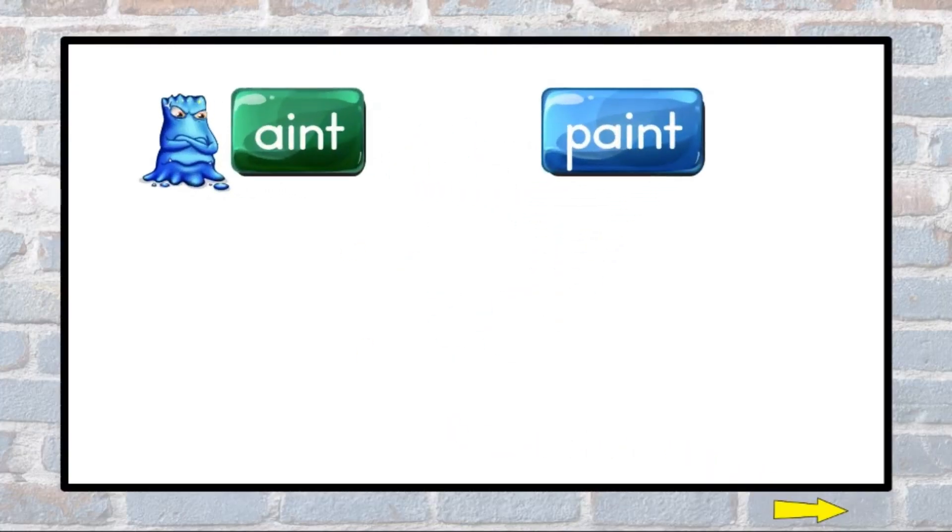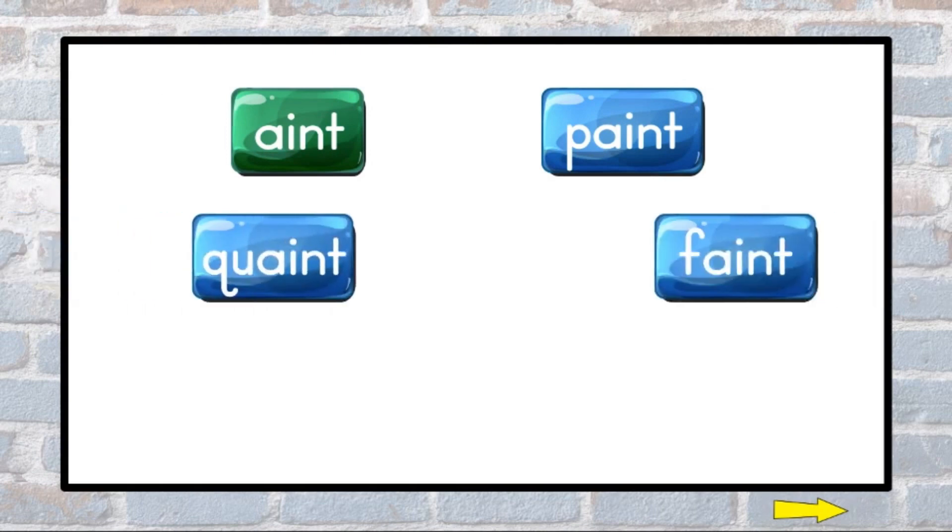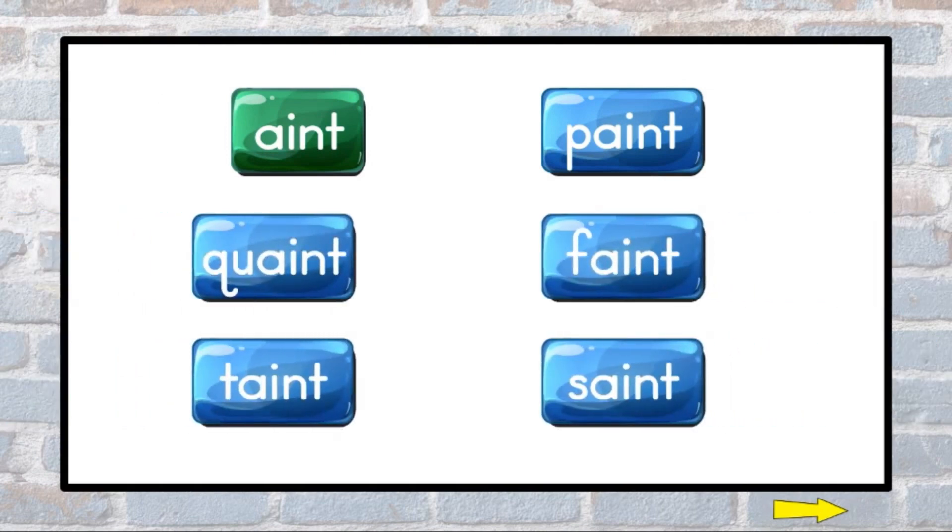The word paint ends with N-T and has a long A sound. It's not a rule breaker because A-I is a way to spell the long A sound. Read the words that spell the long A sound with A-I and have the ending blend in T.